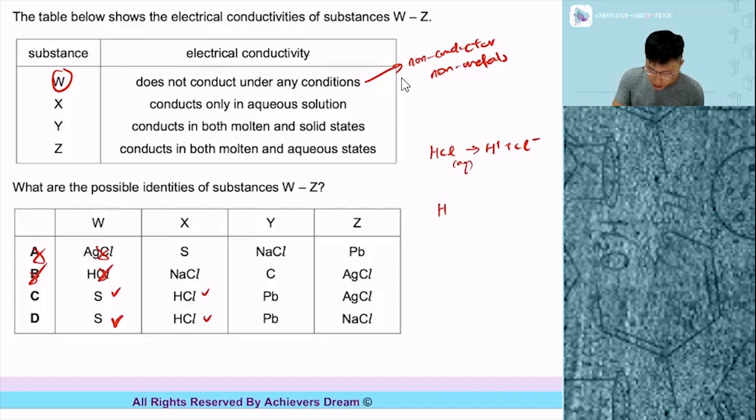Whereas HCl, if it's a gas, it remains as a molecule. This cannot conduct electricity.